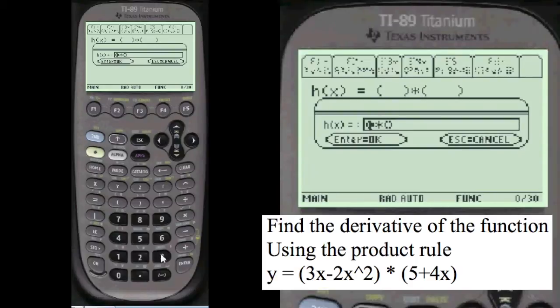Which is 3 times x minus 2 times x squared.